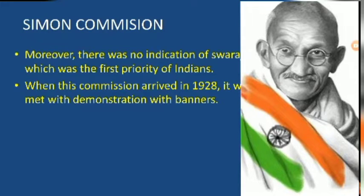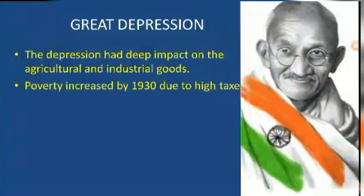Indians boycotted the Simon Commission as there were no Indian members in it. Moreover, there was no indication of Swaraj, which was the first priority of Indians. When this commission arrived in 1928, it was met with demonstrations with banners written 'Simon Go Back.'